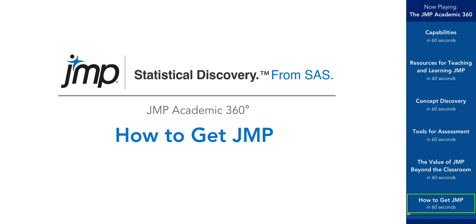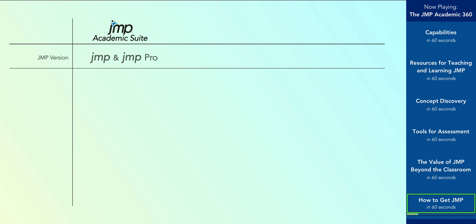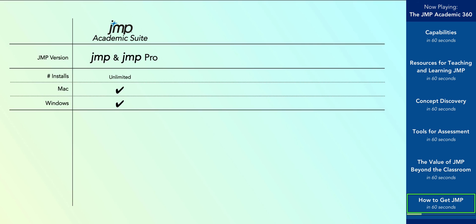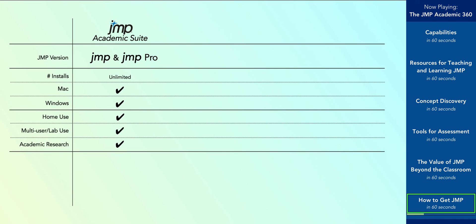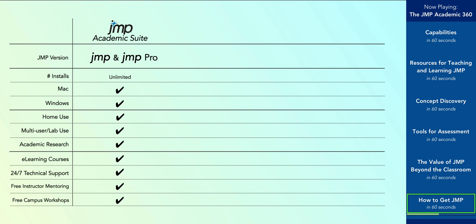With affordable licensing options to fit every situation, it's never been easier to get JMP in your classroom. The JMP Academic Suite gives access to JMP Pro for an unlimited number of academic users, both on campus and at home on personal computers. The JMP Academic Suite is available for an entire campus or for an individual department, all for one affordable annual fee. All Academic Suite licenses include 24/7 technical support, as well as unlimited access to the JMP eLearning courses. If no campus-wide license is available, students can still get JMP through On The Hub, our academic licensing partner.